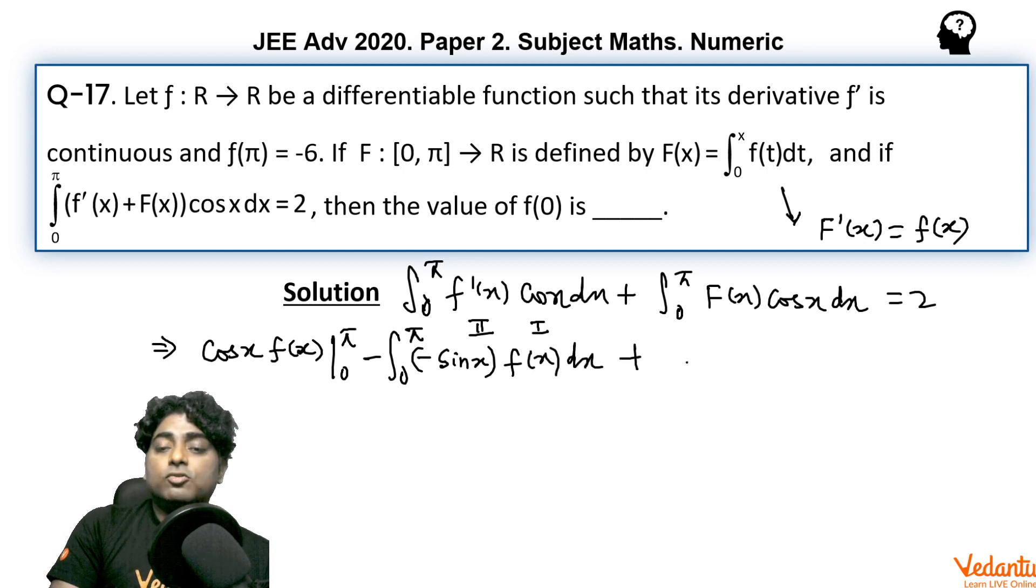Again applying by parts to the second integral, I'm going to take F(x) as first because we know the derivative in terms of f from this relation, and cos(x) will behave as second function. So we'll keep f(x) as it is